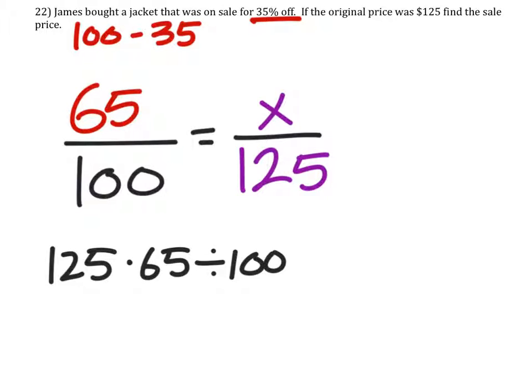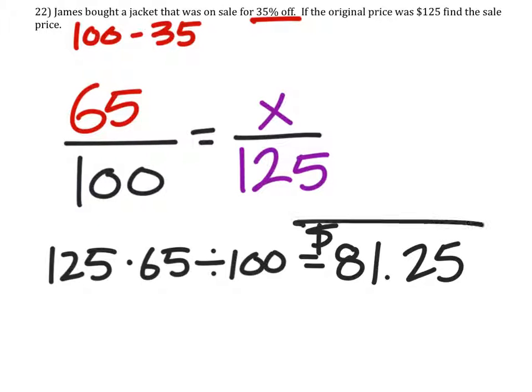We have $125 times 65 divided by 100, and that gives us $81.25. That is how much the jacket will be on sale for.